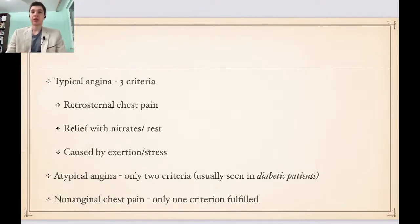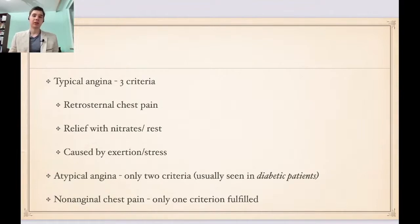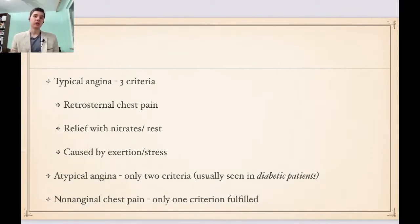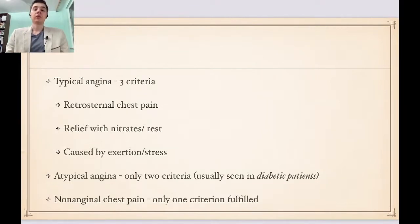Atypical angina, on the other hand, fulfills only two criteria. Some patients that usually have atypical angina are patients with diabetes. They might present with retrosternal chest pain and it would be caused by exertion. More frequently, diabetic patients lack the chest pain component due to autonomic neuropathy induced by hyperglycemia. Non-anginal chest pain fulfills only one criterion from the above.